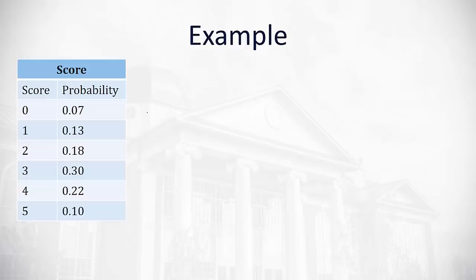For example, with the scores and probabilities from the previous example, to find the mean, we'll first take all of our x values, or our scores, and multiply them by the probabilities, which are in the second column here.